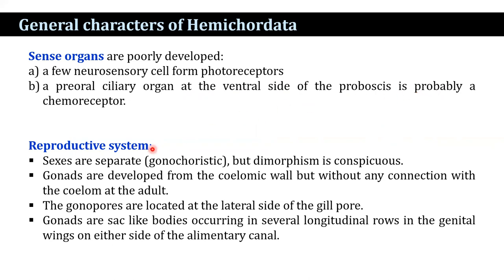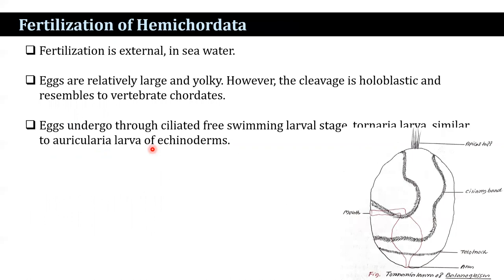In the reproductive system, the sexes are separate (gonochoristic) but dimorphism is not conspicuous. Gonads are developed from the coelomic wall but without any connection with the coelom in the adult. Gonads are sac-like bodies occurring in several longitudinal rows in the genital wings on either side of the alimentary canal. Fertilization is external in sea water. Eggs are relatively large and yolky; however, cleavage is holoblastic, resembling basal chordates. Eggs develop through a free-swimming larval stage known as the tornaria larva, similar to the auricularia larva of echinoderms. Gradual metamorphosis occurs thereafter.